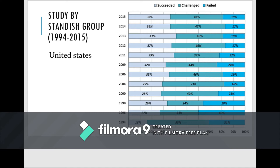Succeed means the project fulfills four objectives: quality, time, budget, and customer needs are all fulfilled. The challenging part means the project is complete but the objectives are not fully fulfilled — for example, if quality, time, and customer needs are met but the budget has increased, that is considered a challenging project.